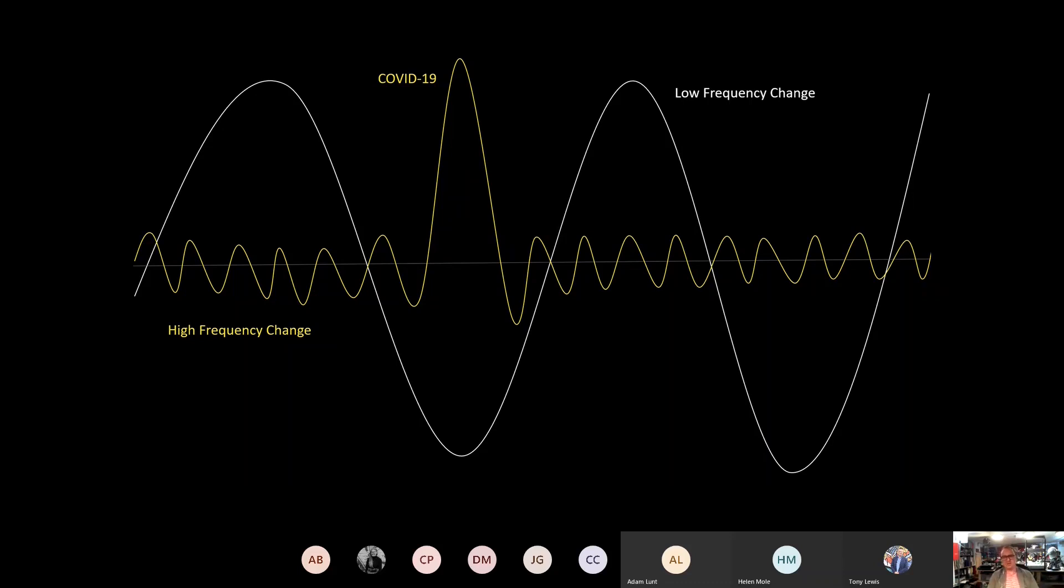An example of low frequency change might be something like the advent of the washing machine and domestic automation, which shifted the number of hours that we, and I use the word 'we' advisedly because it's still women who bear the brunt of this, and it certainly was five generations ago. Five generations ago, women were doing 63 hours a week of domestic labor.